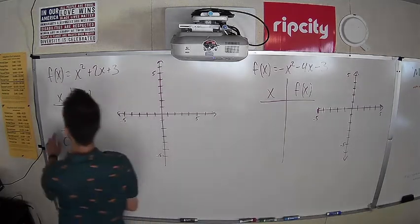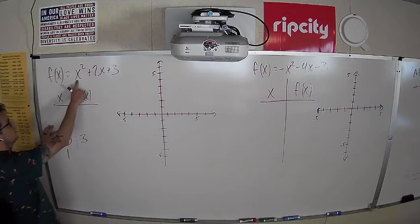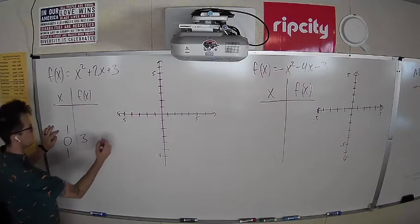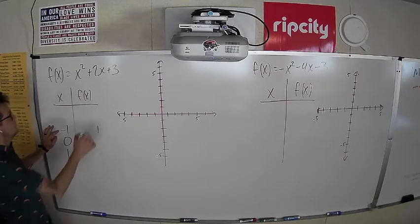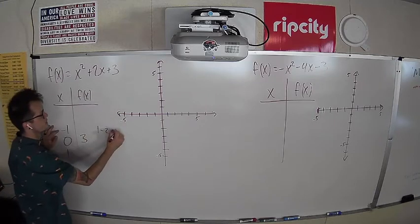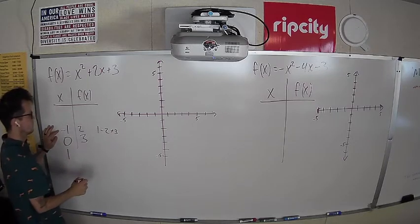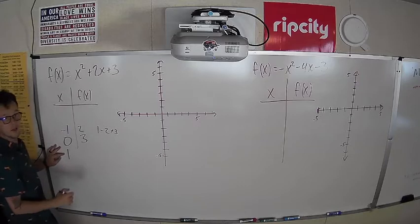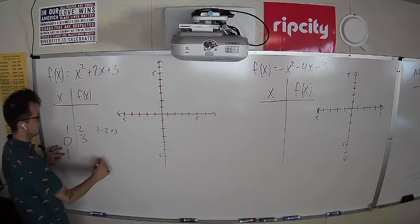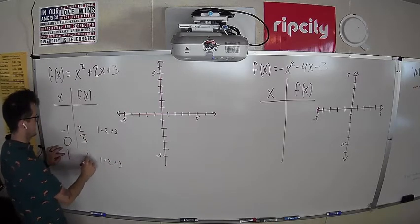Starting with negative 1: negative 1 squared is positive 1, 2 times negative 1 is negative 2, plus 3 gives us 1 minus 2 plus 3 = positive 2. Now positive 1: 1 times 1 is 1, 2 times 1 is 2, plus 3. That's 1 + 2 + 3 = 6.